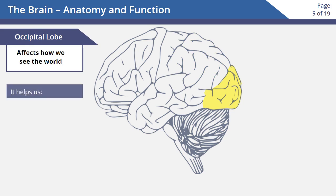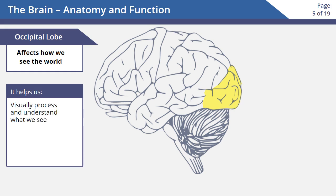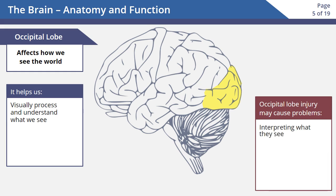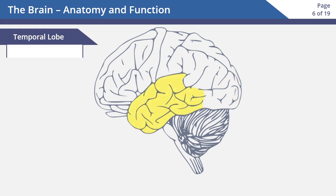The occipital lobe affects how we see the world. It integrates with the other parts of the brain to help us visually process and understand what we see. Someone with an injury to the occipital lobe may have problems interpreting what they see, or even getting the visual images.